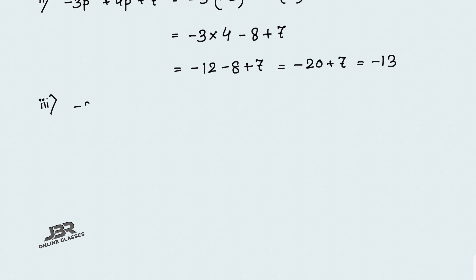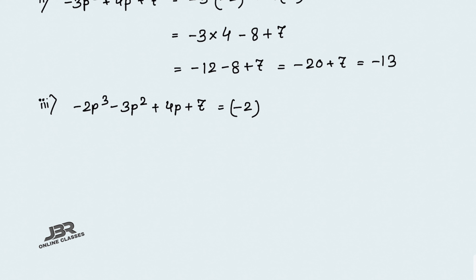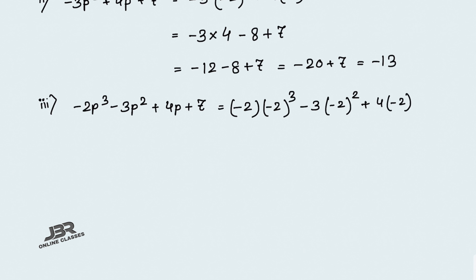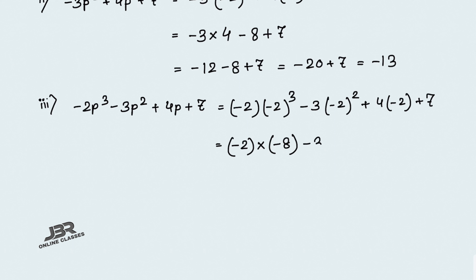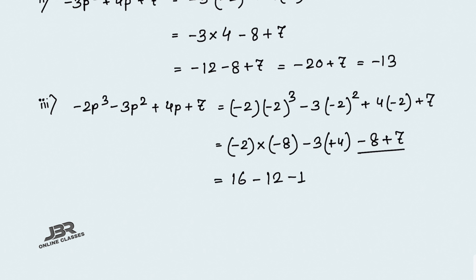Number 3: minus 2p³ minus 3p² plus 4p plus 7. Substituting p equals minus 2: minus 2 into (minus 2)³ minus 3 into (minus 2)² plus 4 into (minus 2) plus 7. Now (minus 2)³ — power is 3, an odd number, so it stays negative: minus 8. And (minus 2)² is positive 4. So minus into minus 8 gives plus 16, minus 12, minus 8 plus 7 equals minus 1. So 16 minus 13 equals 3.